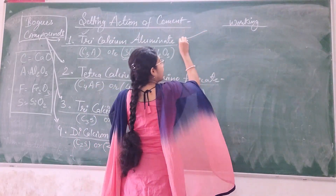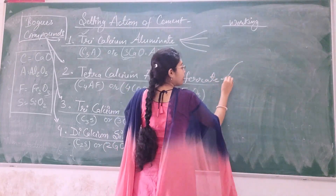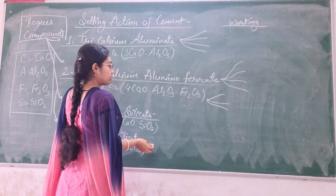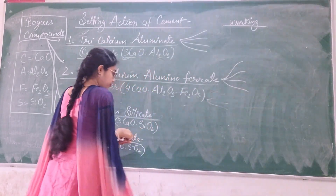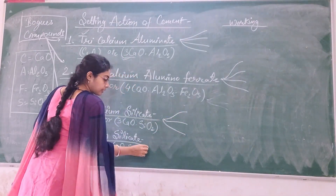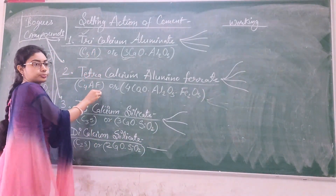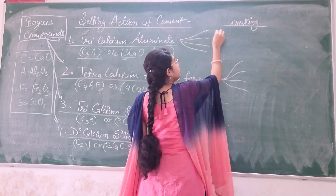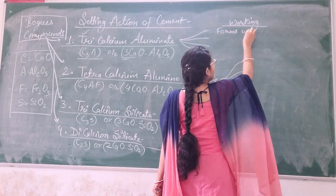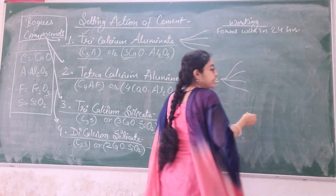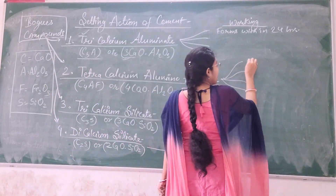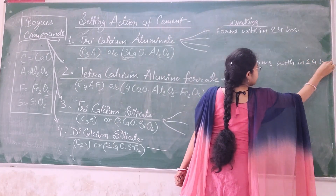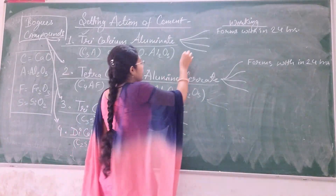Now for the working of these four compounds: the first two compounds — C3A and C4AF — are more similar to each other. Both of these compounds form within 24 hours of adding water to cement. I can't say they form in half an hour or 10 hours specifically, but within 24 hours these two compounds are formed.